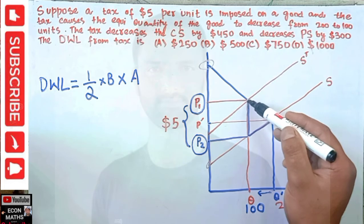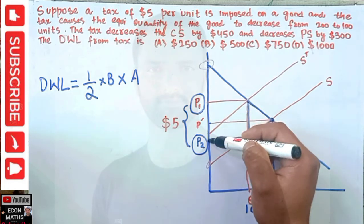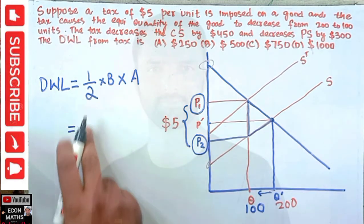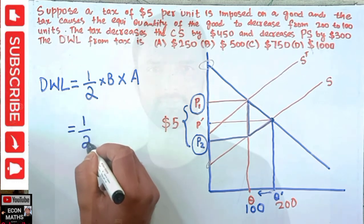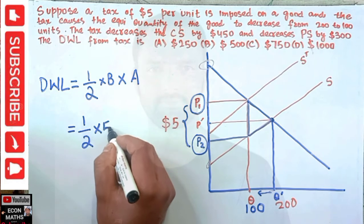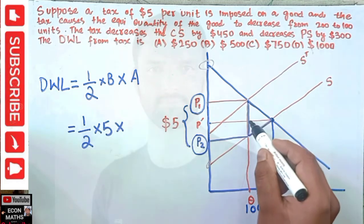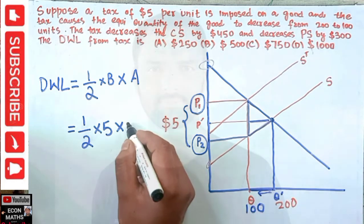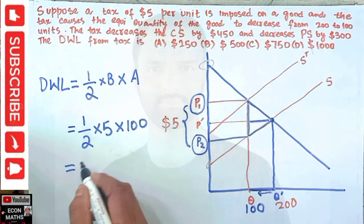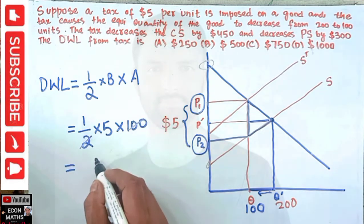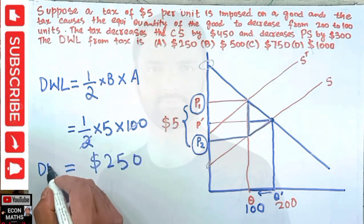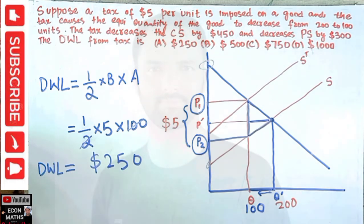The dead weight loss is simply the area of this triangle. Area of a triangle equals one-half times base times height. The base of the triangle is the tax amount — five dollars. The height is the change in quantity: 200 minus 100, which equals 100. So dead weight loss equals one-half times five times 100, which gives us $250.